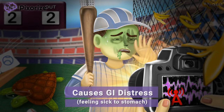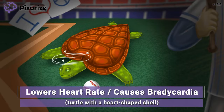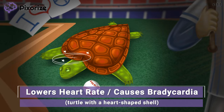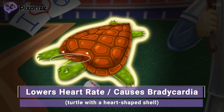But the pressure of winning the game isn't the only thing making the baseball player sick. With his last hit, the baseball hit a turtle who was slowly making his way across the field. The fans didn't like that very much, and the baseball player feels awful about it. Notice that this turtle has a heart-shaped shell — this slow turtle with a heart-shaped shell is our symbol for a slow heart rate.